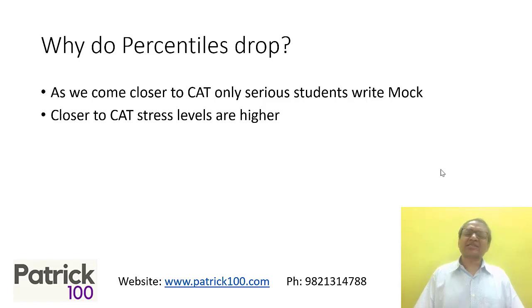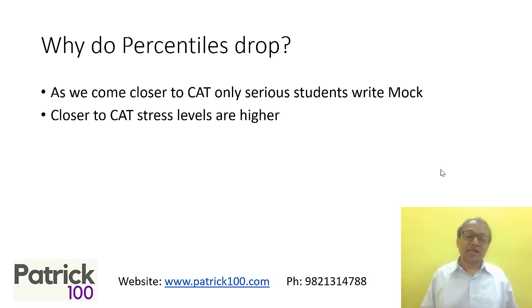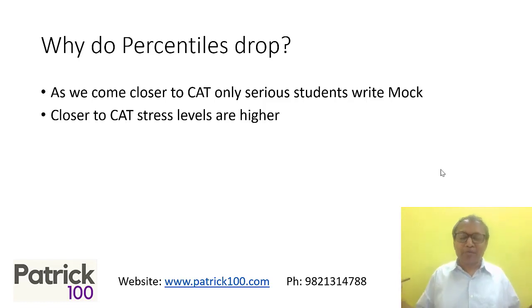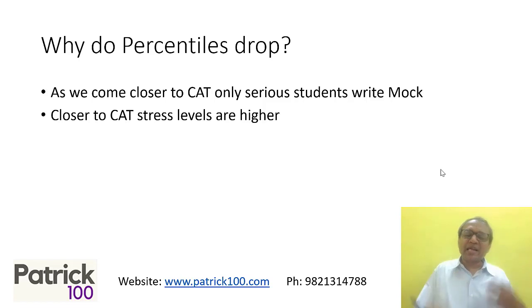Second, closer to CAT, stress levels are higher. If this is the reason for your scores dropping, then work on your stress levels — try to make CAT feel less serious or less important as far as possible. It's very common that when you come close to the examination, you're really anxious and stressed because it feels like a do-or-die situation. Because of that, when you write the mock, your scores go down. Then you come under more stress because your scores went down, you write one more mock, scores drop further. It's a cycle: scores going down, higher stress, scores going down, higher stress.